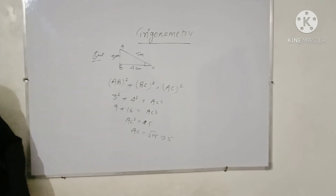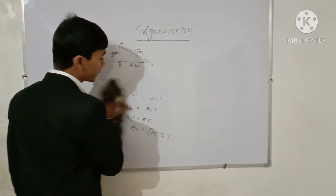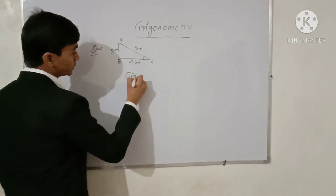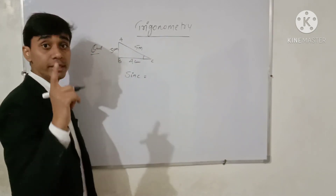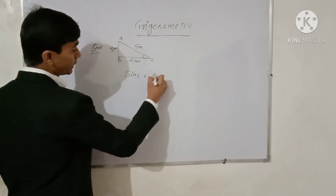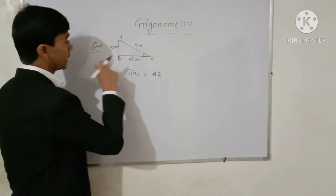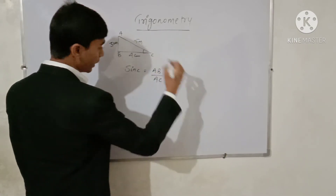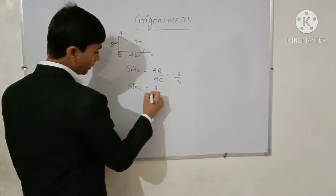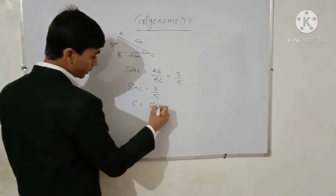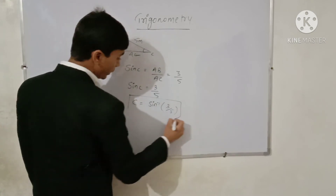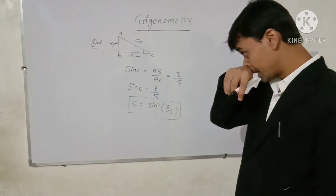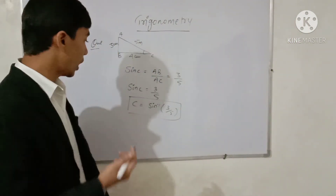Now, if we want to calculate angle C: sin C equals perpendicular upon hypotenuse. The perpendicular here is AB and the hypotenuse is AC. AB equals 3 cm and AC equals 5 cm, so sin C equals 3 by 5. Therefore, angle C equals sin inverse of 3 by 5. As we move further into Trigonometry, we will learn how to evaluate such inverse values.